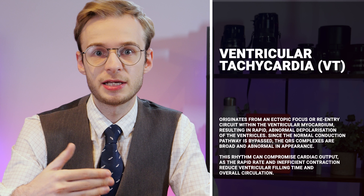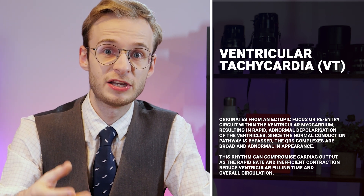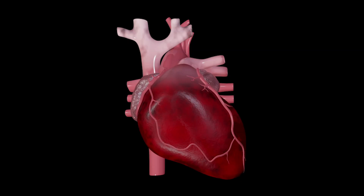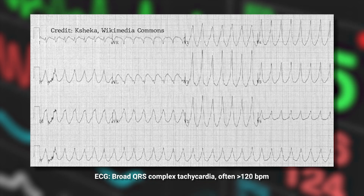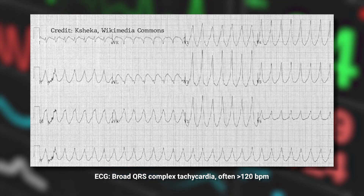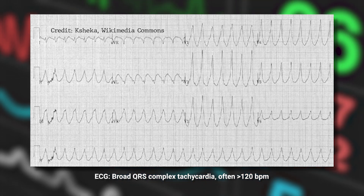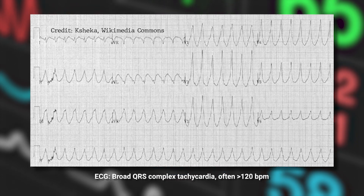Now the arrest rhythms. Ventricular tachycardia originates from an ectopic focus or re-entrant circuit within the ventricular myocardium, leading to rapid, abnormal depolarisation. Since the normal His-Purkinje conduction pathway is bypassed, the QRS complexes are broad and completely abnormal in appearance. This rhythm can compromise cardiac output due to both the rapid rate and inefficient contraction. On the ECG, we expect to see a broad complex tachycardia.